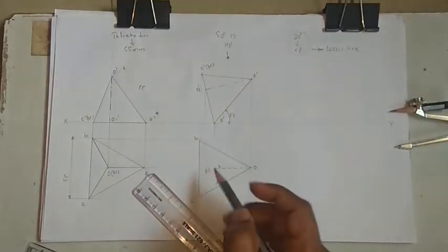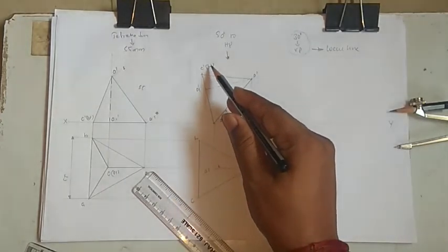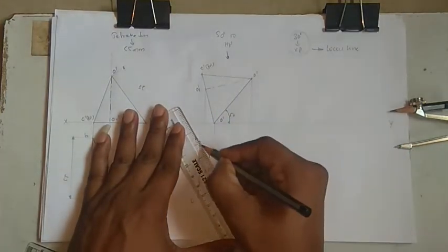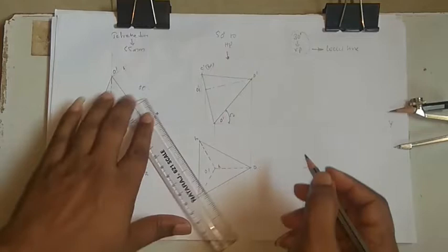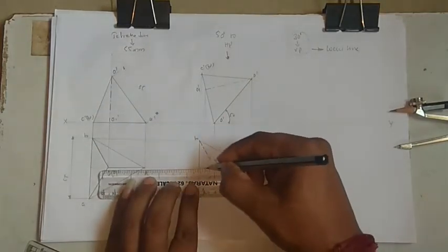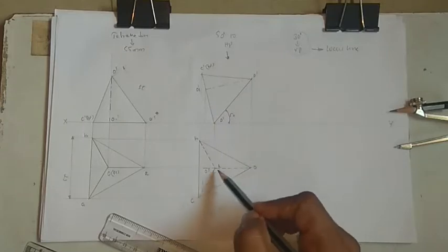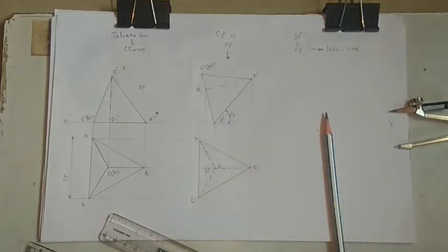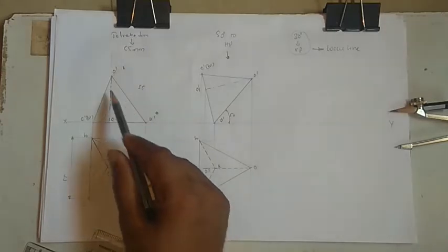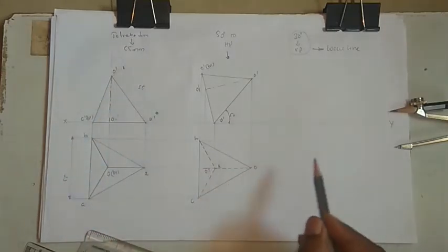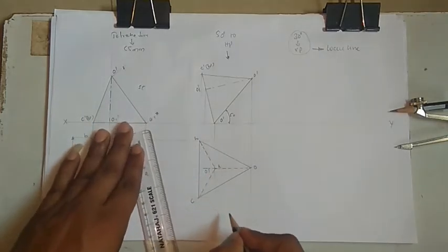A to O is not visible, so it is a dotted line. A to C and A to B are also not visible — just drop them as dotted. The resting corner is O. O to A and B to C are not visible. This side, O to A, is inclined — here it is just 55mm. Take the measurement and drop it here.